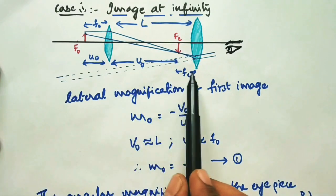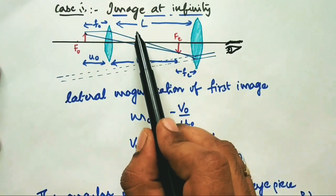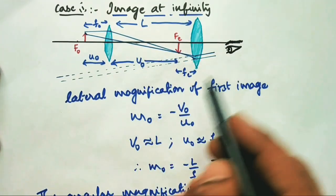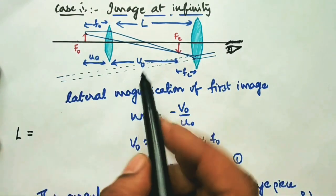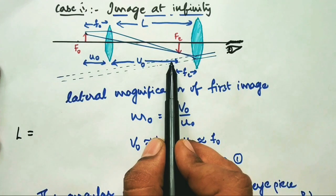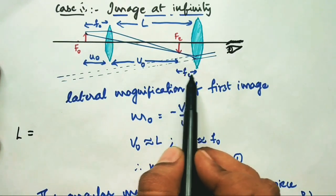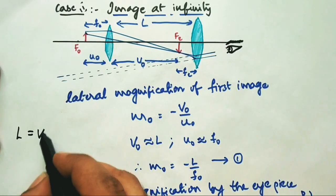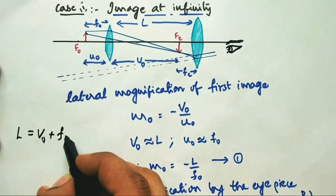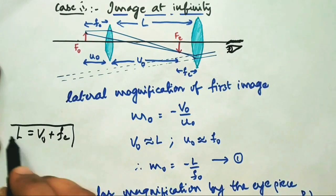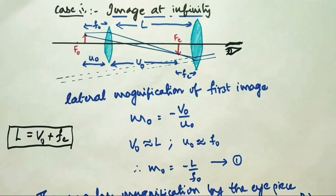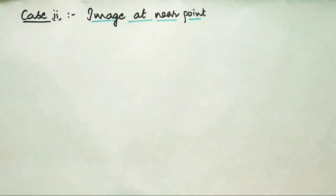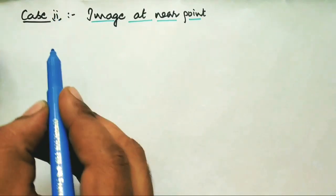There is one more important term: the length of the microscope or length of the tube. From the figure, it is clear that L is the sum of v_o and f_e — that means the image distance from the objective plus the focal length of the eyepiece. With this, we can find out the length of the compound microscope.